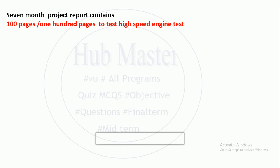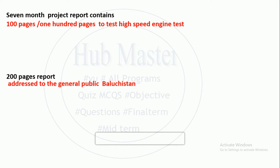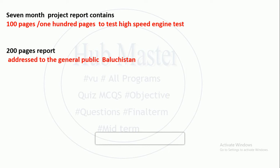If we talk about the 7th month project report — they have talked about the direct pages. They say that there is a 200-page report. What is the purpose of the report? The two hundred pages report is addressed to the general public.